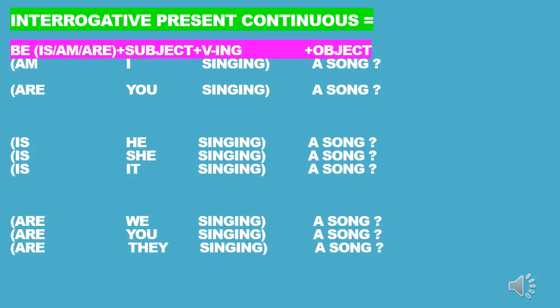Let's see more examples. 'Am' is the verb to be, 'I' is the subject, 'singing' comes from the verb 'sing' by adding -ing. 'A song' is the object. 'Are' is the verb to be, 'you' is the subject, 'singing' comes from 'sing', 'a song' is the object. 'Is' is the verb to be, 'he' is the subject, 'singing' from 'sing', 'a song' is the object. Similarly for 'she' and 'it'.